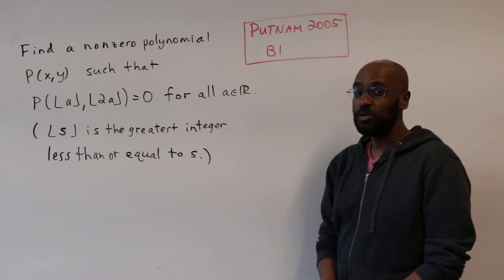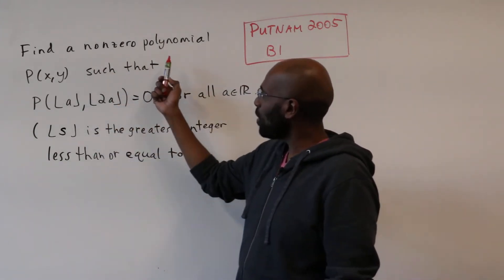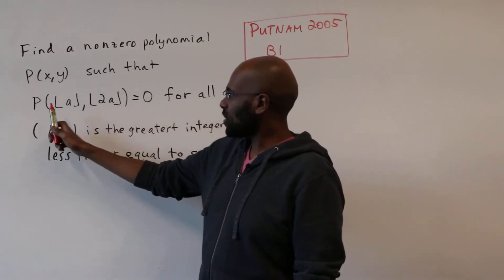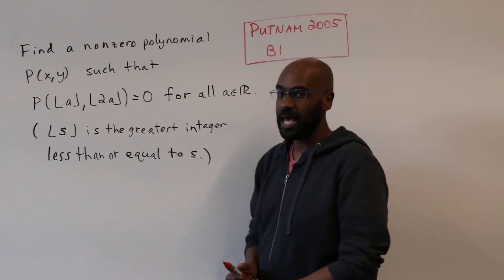Today we're going to solve problem B1 on the Putnam 2005 and it states to find a non-zero polynomial p such that p evaluated at the floor of a, floor of 2a is 0 for all real numbers a.